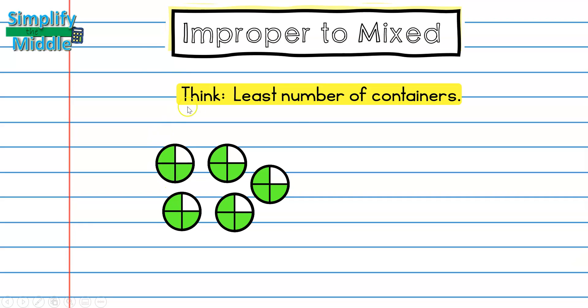Whenever I have an improper fraction, I always want to think what is the least number of containers that I could repackage this into. As you could see, we can imagine that we have five personal pan pizzas, one piece from each pizza has been taken and eaten.